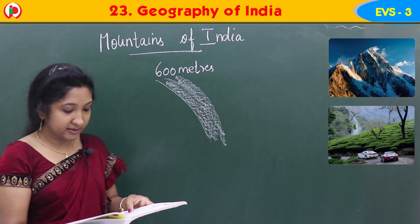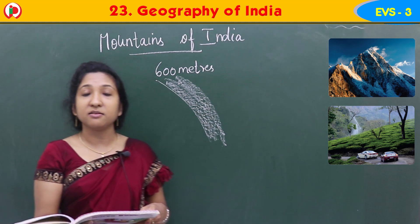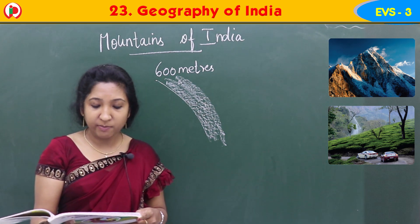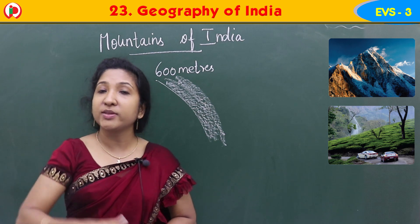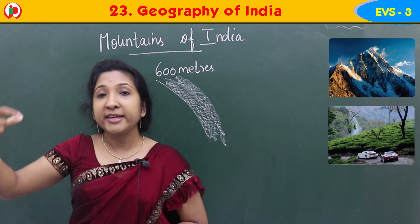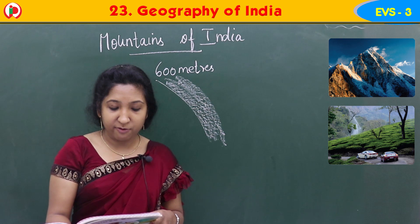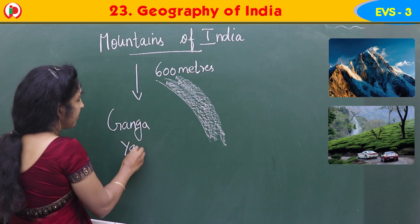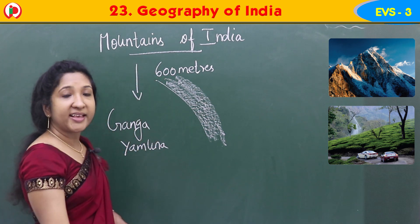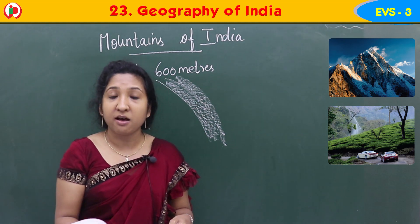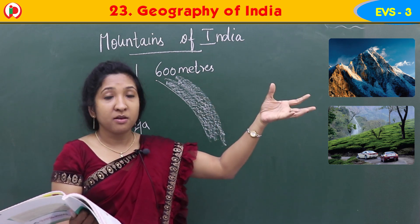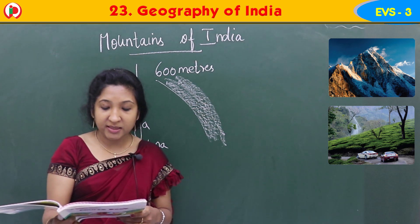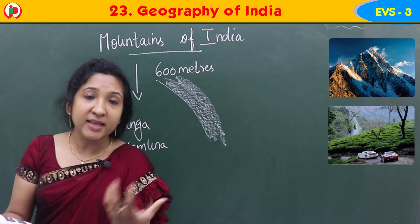The Himalayas remain covered with snow throughout the year. Many rivers like Ganga and Yamuna flow from these mountain ranges to the plains. The top of the mountains are covered with snow; the snow melts and the water flows into the rivers. So rivers like Ganga and Yamuna flow from mountain ranges to the plains. These rivers are formed by the melting of snow.